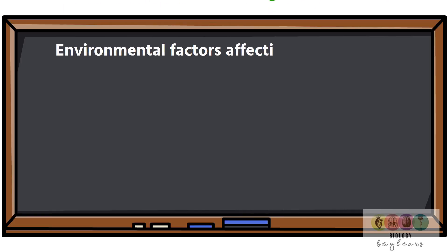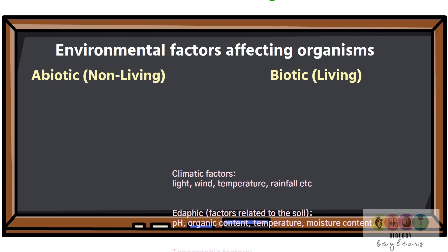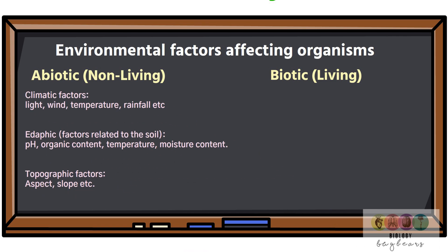When considering an ecosystem, you also consider the environmental factors affecting organisms. These split into abiotic — non-living — factors and biotic — living — factors. Abiotic factors can be further split into climatic factors, edaphic factors, and topographic factors. Edaphic factors are specifically factors related to the soil.